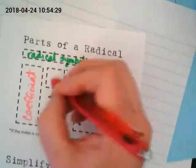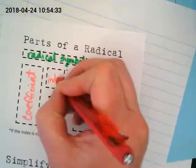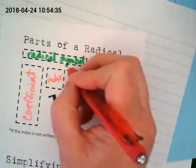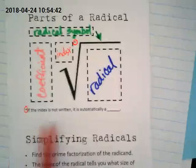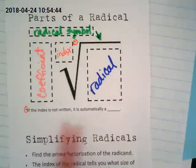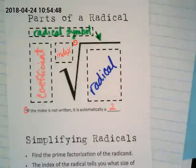The new part today is that we have here an index. And notice this little tiny asterisk up here? It takes you down to this asterisk here. If the index is not written, it is automatically a two. It's the only invisible that we work with in Algebra 1 that is not a one.